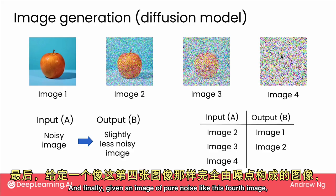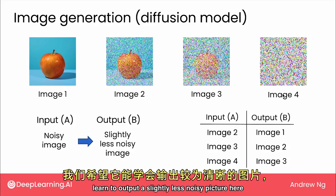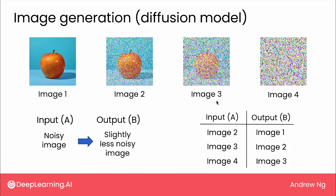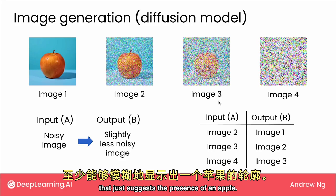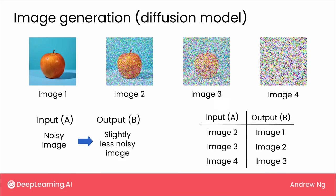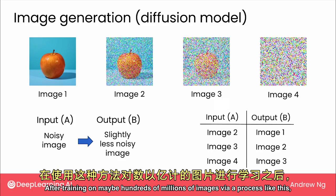And finally, given an image of pure noise like this fourth image, we would like it to learn to output a slightly less noisy picture that just suggests the presence of an apple. After training on maybe hundreds of millions of images via a process like this, when you want to apply it to generate a new image, this is how you would run it.